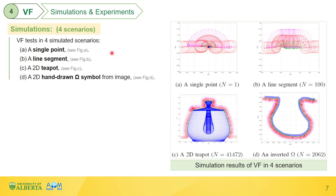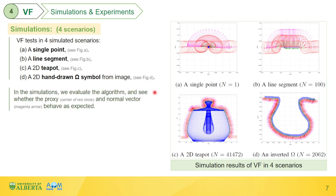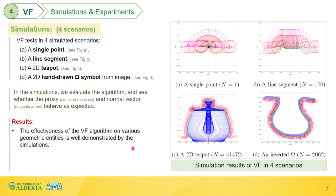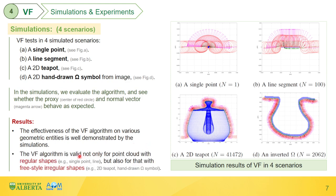To evaluate the effectiveness of the VF algorithm, a series of simulations and experiments are conducted. For the simulations, four scenarios are considered: a single point, a line segment, a 2D teapot, and a 2D hand-drawn omega symbol from an image. The proxy is represented by the center of red circles, and the normal vector by magenta arrows. Results show the algorithm is effective for both regular shapes such as the single point and line segment, and free-style non-regular shapes such as the 2D teapot and hand-drawn omega symbol.